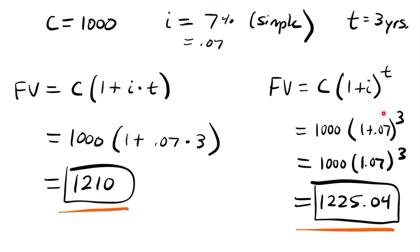This is because with compound interest, you earn increasingly more interest with every new period, rather than simple interest where your interest increases at a consistent rate. It doesn't matter how long you hold a simple interest rate — the interest increases by the same amount every single year. Looking at these as functions of t: compound interest is an exponential function, so the interest earned grows by larger and larger amounts, while simple interest is a linear equation — a straight line on a graph.